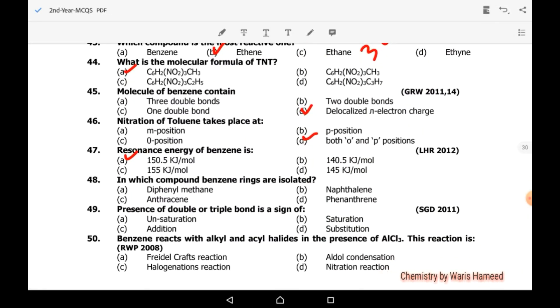In which compound are benzene rings isolated? Diphenyl methane has isolated benzene rings. Diphenyl methane, and naphthalene - all these have polyaromatic hydrocarbon. Presence of double bond or triple bond is a sign of unsaturation. Benzene reacts with alkyl and acyl halide in the presence of AlCl3. This reaction is known as Friedel-Crafts reaction.